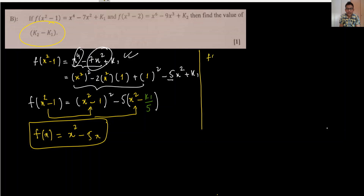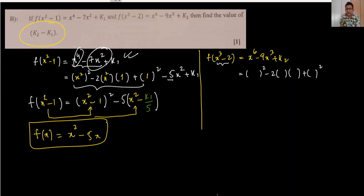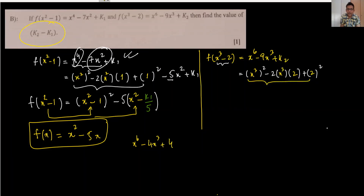For the second equation: f(x³ - 2) = x⁶ - 9x³ + k2. We expand (x³ - 2)² = x⁶ - 4x³ + 4. Writing this in complete square form as (x³ - 2)², we see x⁶ matches. But we have -9x³ and only -4x³, so -5x³ is missing.